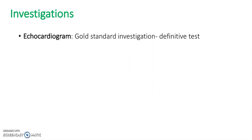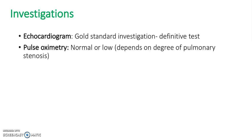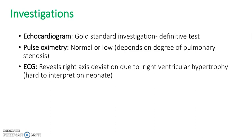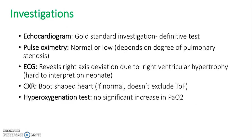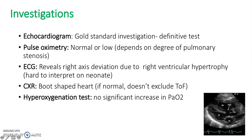What investigations would we do? The echocardiogram is the gold standard investigation — this is the definitive test to see whether a baby has tetralogy of Fallot. Pulse oximetry can also be used; this would be normal or low depending on the degree of pulmonary stenosis. An ECG could reveal right axis deviation due to right ventricular hypertrophy, however it is hard to interpret this on a neonate. A chest x-ray can reveal a boot-shaped heart because of the right ventricular hypertrophy and the overriding aorta. If normal, that doesn't exclude tetralogy of Fallot. A hyperoxia test would reveal no significant increase in PaO2. Here's an echocardiogram so you can see the defects very clearly.